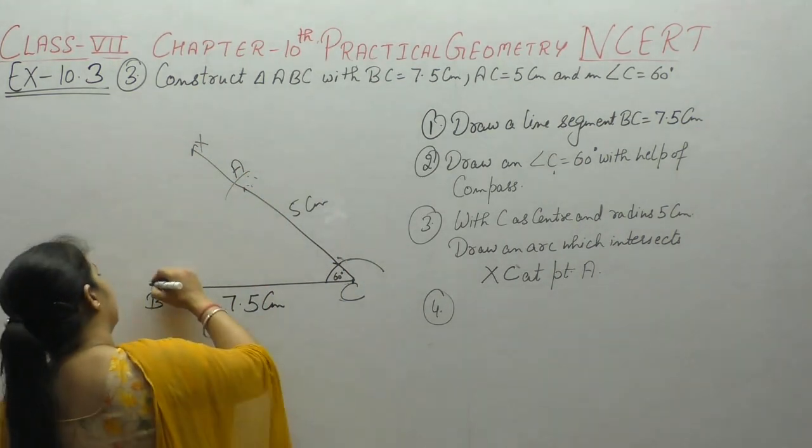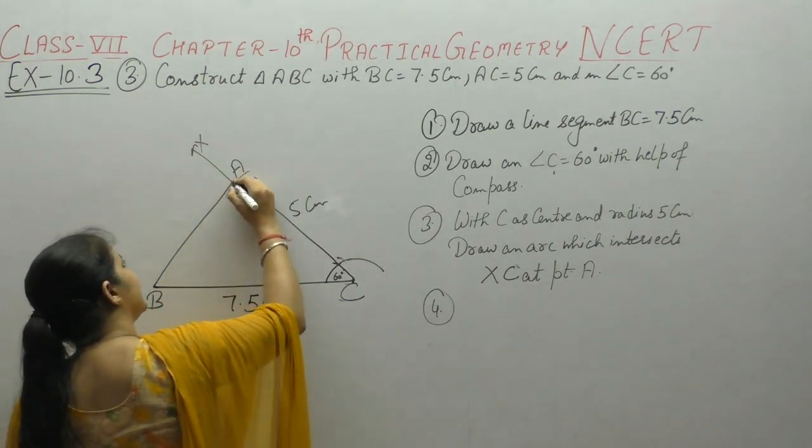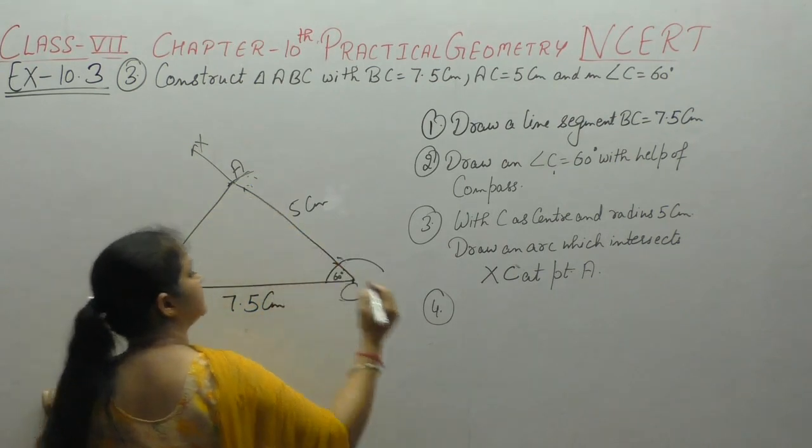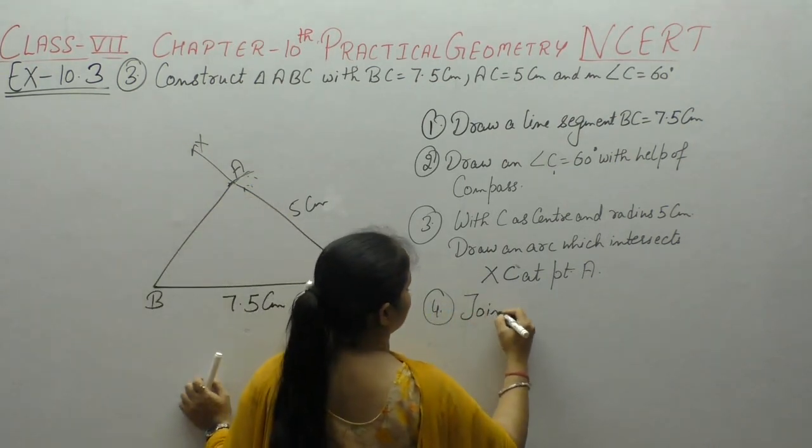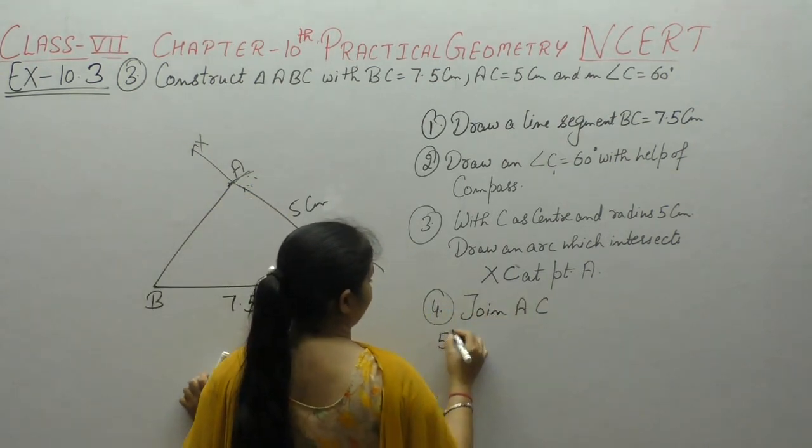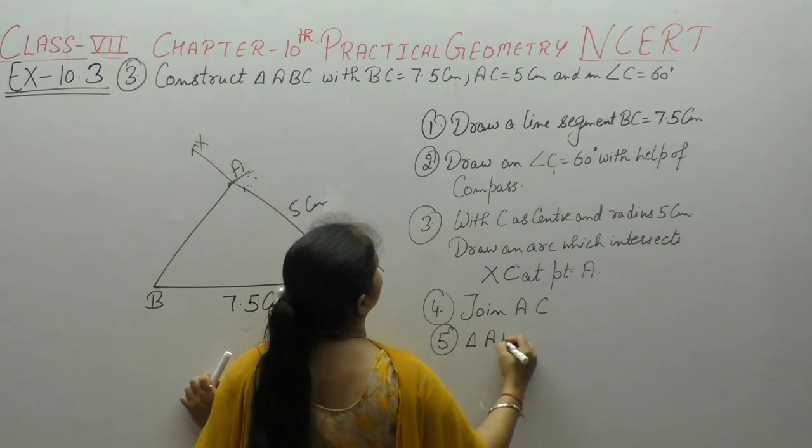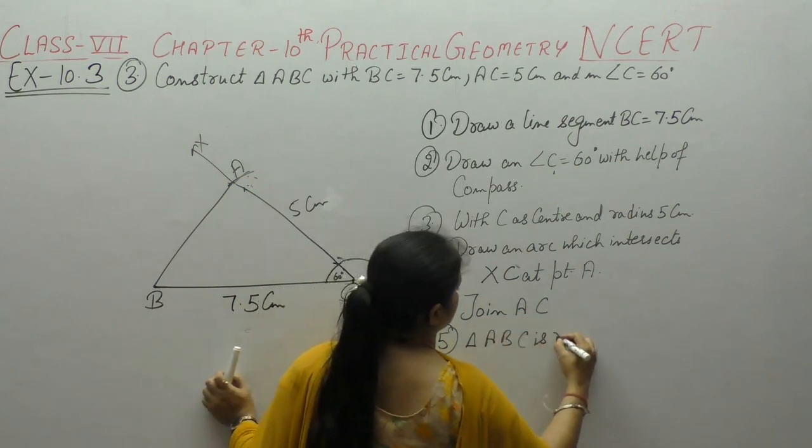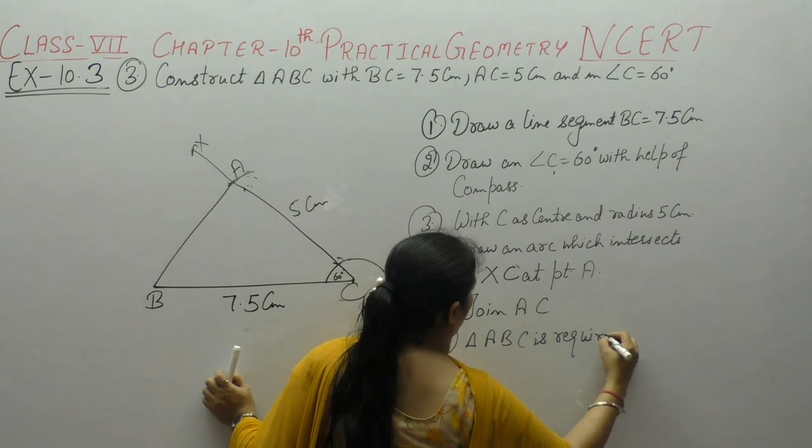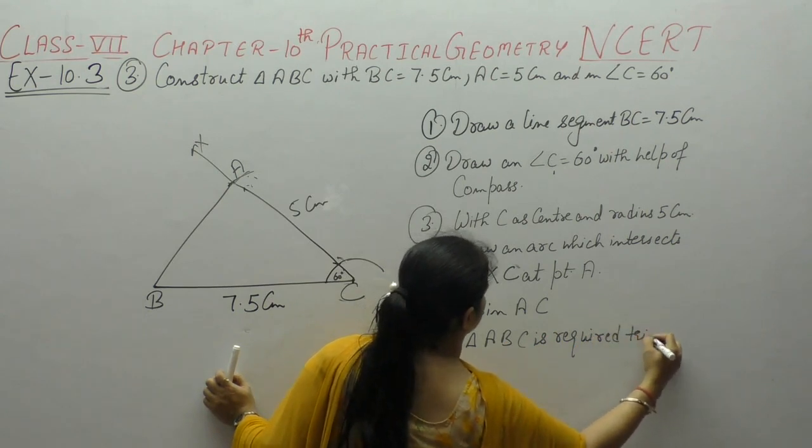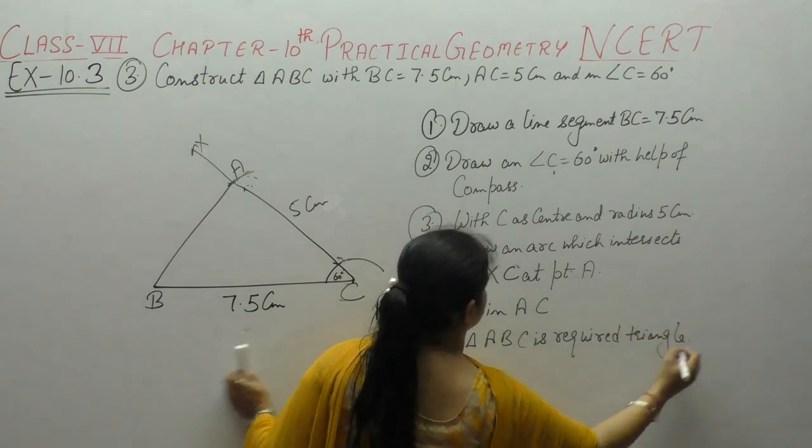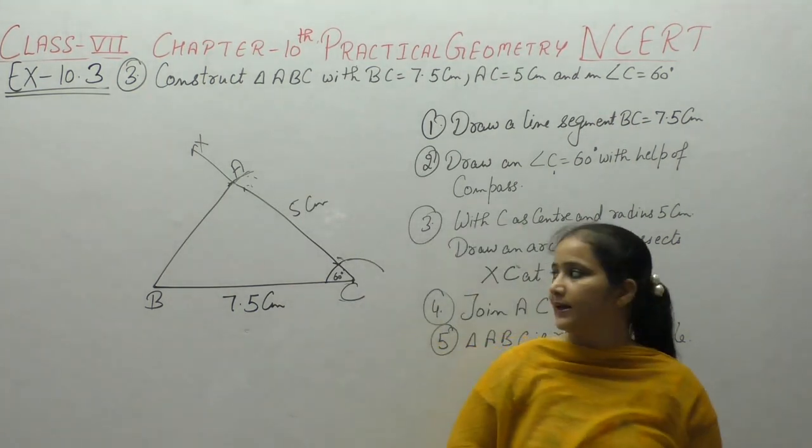The next step is join AC. Join AC. Triangle ABC is required triangle.